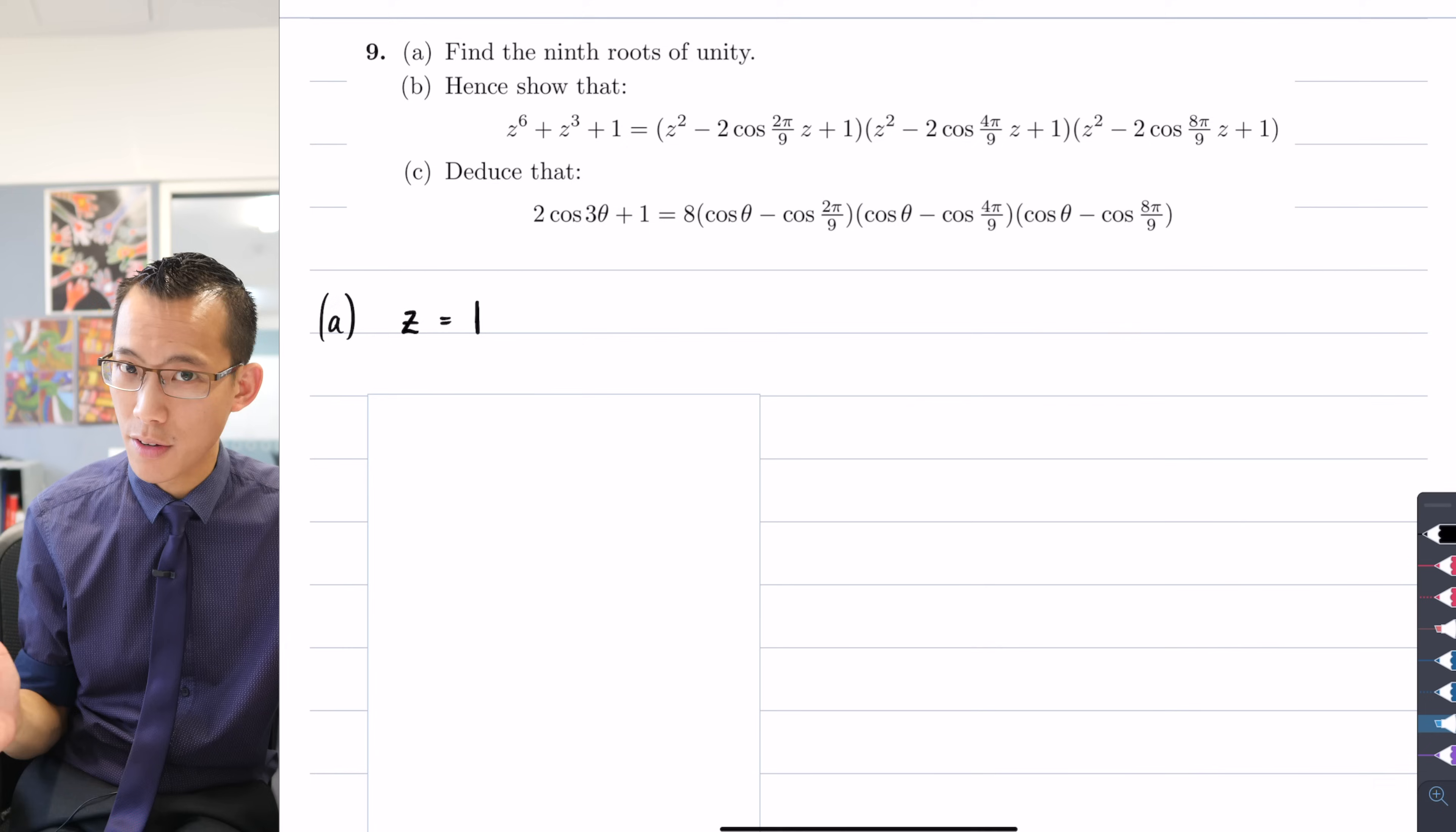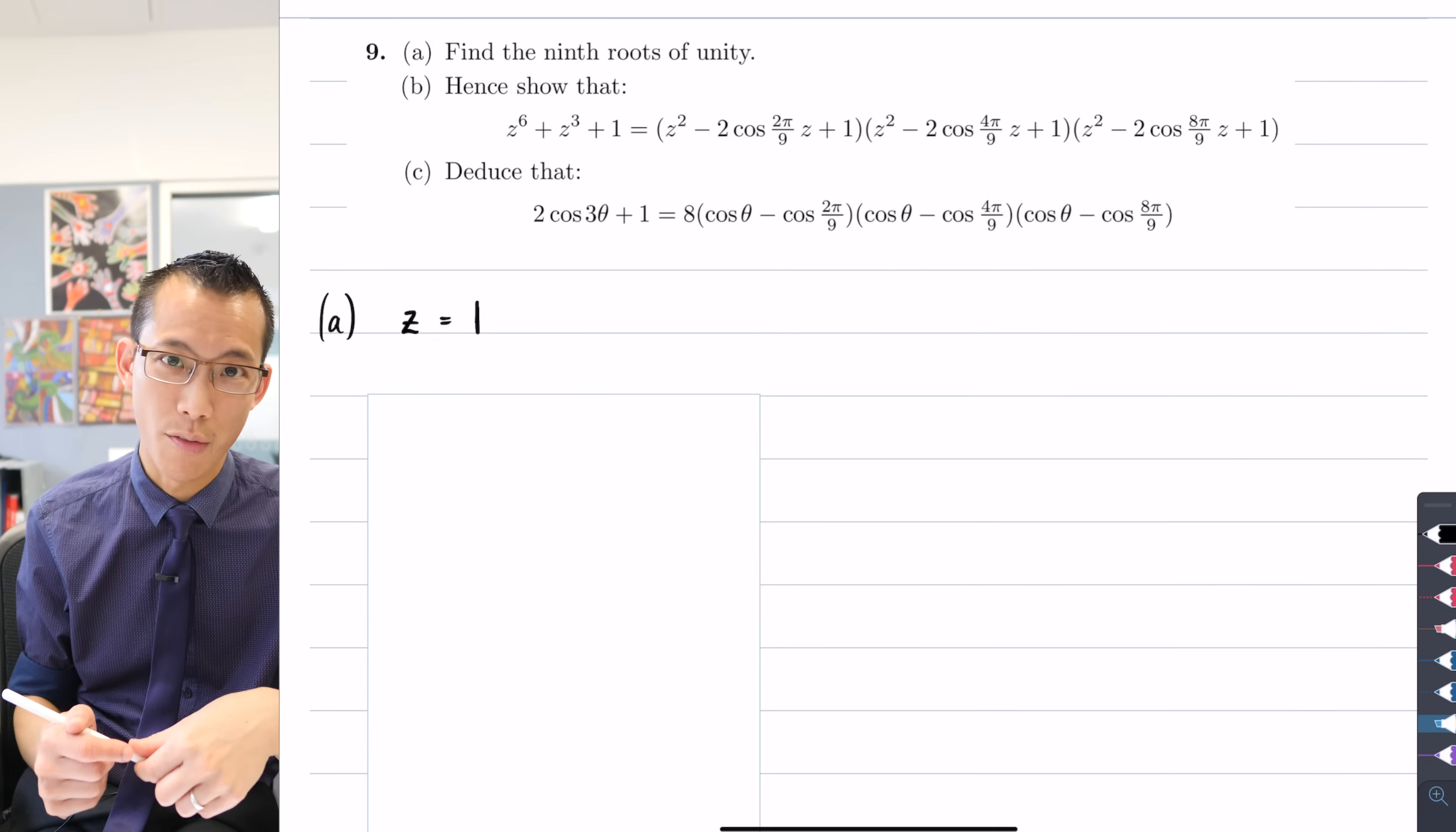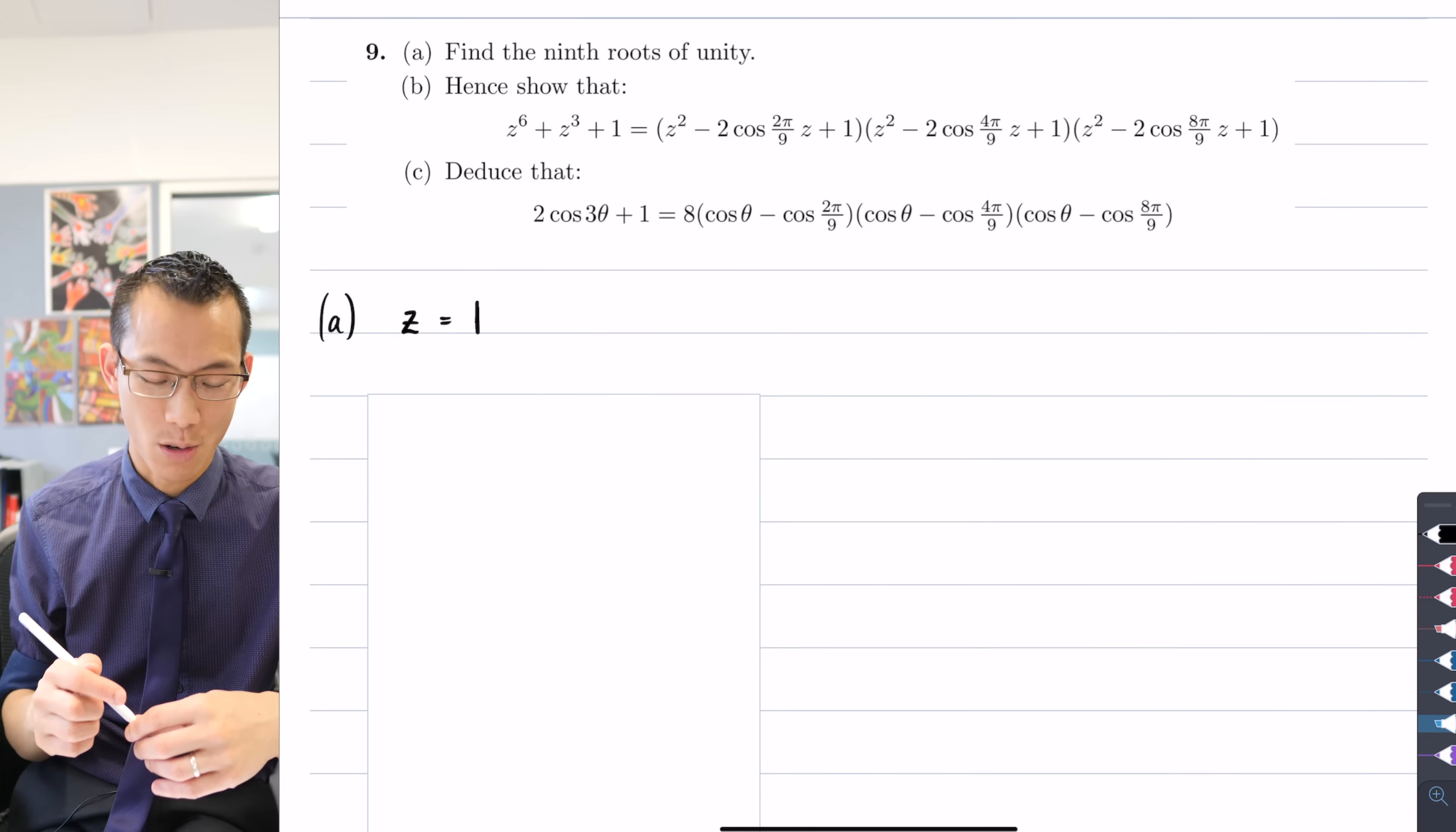But when we think about the rest of the roots, number one, we know there are nine in total. So I'm going to have eight more to write. And secondly, I also know that they are all evenly spaced around the circumference of the unit circle, just like one is. We're going to start from one, go anti-clockwise around until we run out of ones that we can fit within the principal argument. And then we'll go the other way around and do it clockwise.